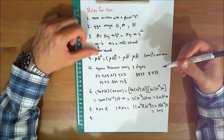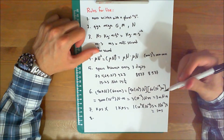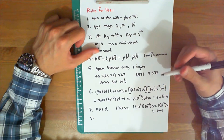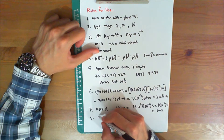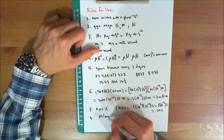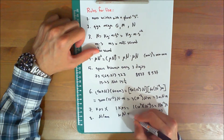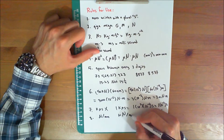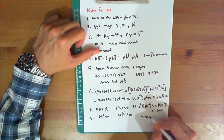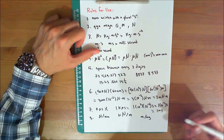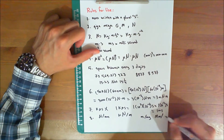Number eight: with the exception of the base unit the kilogram, in general avoid the use of a prefix in the denominator of composite units. For example, do not write newtons per millimeter, but rather kilonewtons per meter. Also, meter per milligram should be written as megameter per kilogram.